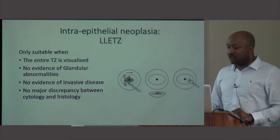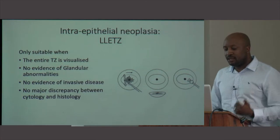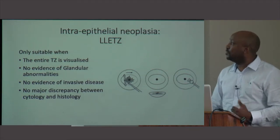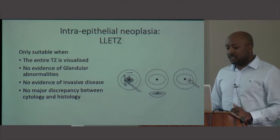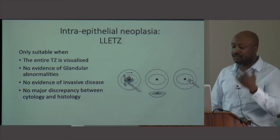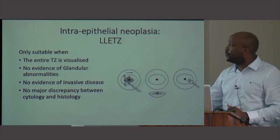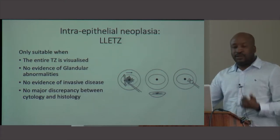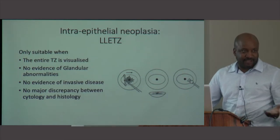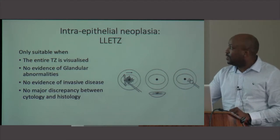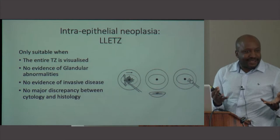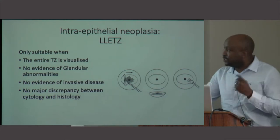To do a loop excision or LLETZ, you should be able to see the transformation zone. In our setup, you don't have to see the entire transformation zone — we've discussed type 1, type 2, and type 3. You don't want to do a LLETZ on a patient who is obviously showing invasion — where you can macroscopically see it, where it's fungating. In that case, you just biopsy.